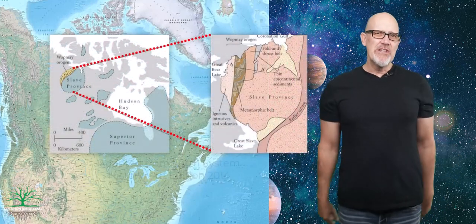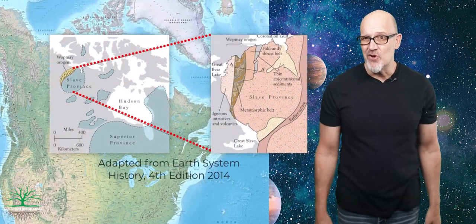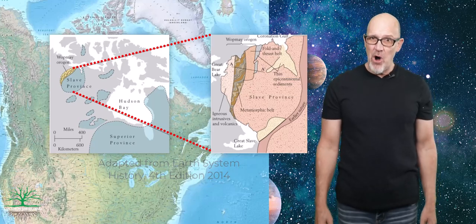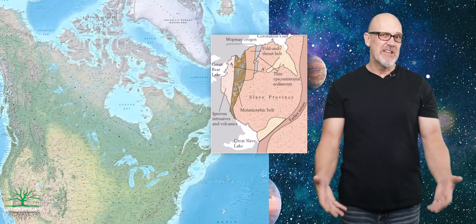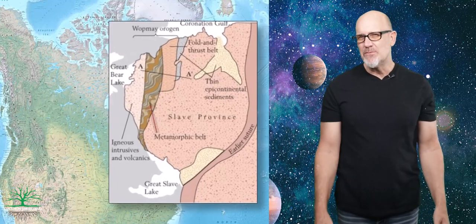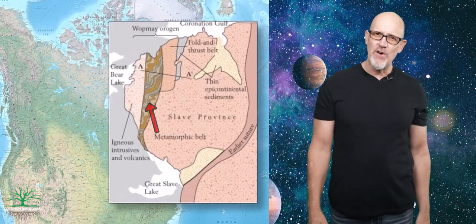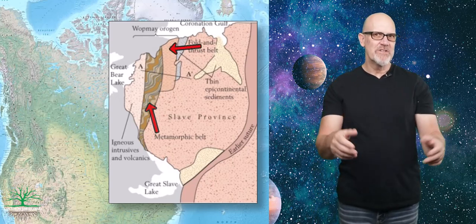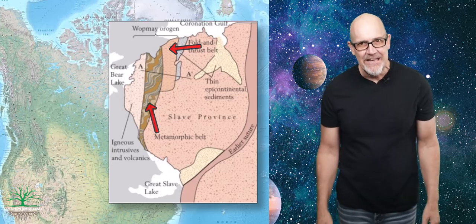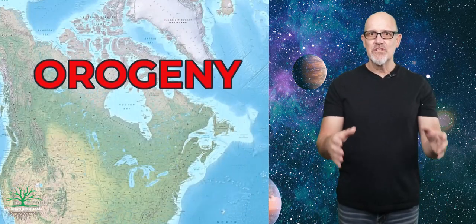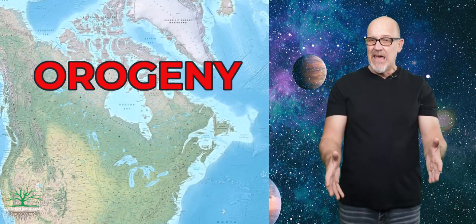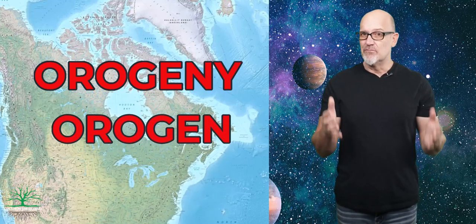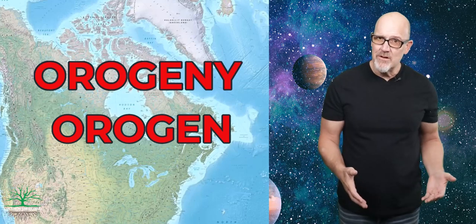So, the Wapme orogeny. It's located in the Canadian Shield and is thought to be one of the earliest mountain building events in Earth's history. Right now the site is relatively flat, but the presence of metamorphic rocks and a truncated fold-and-thrust belt in the ancient rocks suggests that a mountain belt was once located there. The term orogeny refers to the process of mountain building, and the term orogen refers to the body of rock deformed by those processes.